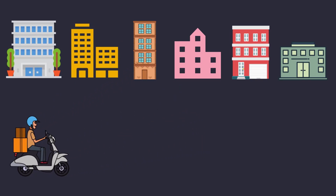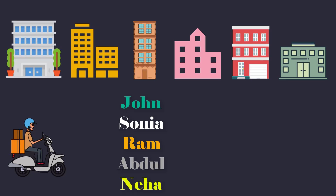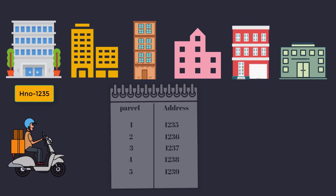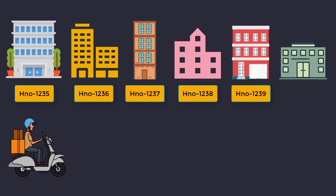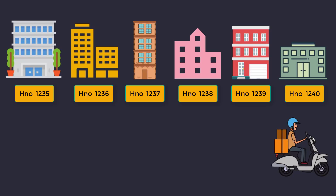Rohan is a delivery boy who delivers packets every day. The biggest challenge he faces every day is to remember customers' names where he needs to deliver packets. Now he came up with a solution by delivering packets through addresses. He chooses one address to deliver packets and from using this address he keeps delivering the packets to other addresses. The similar process in programming is done by pointers.